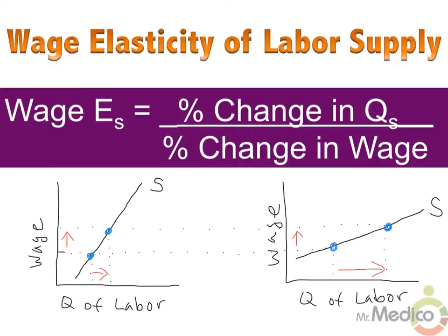In this lesson, we are first going to look at responsiveness in the labor market. The wage elasticity of labor supply can be calculated using percent changes, just like in the price elasticity of demand and supply formulas. We are calculating how responsive laborers are to changes in wages or salaries. The formula is the percent change in the quantity supplied of labor divided by the percent change in wage.